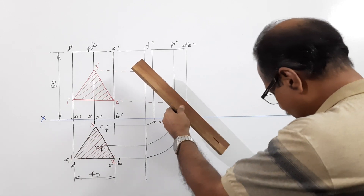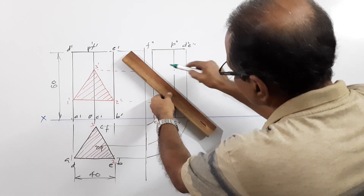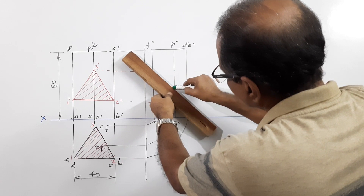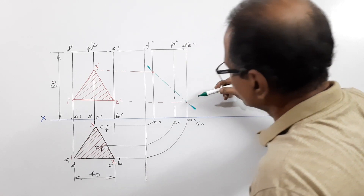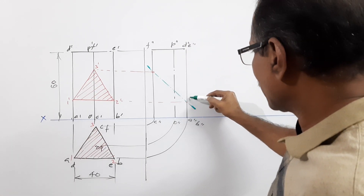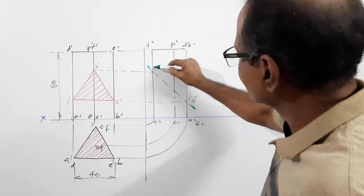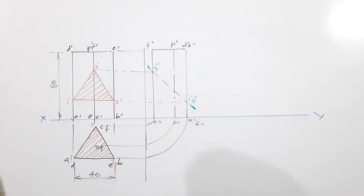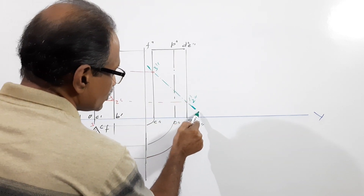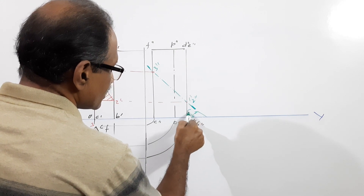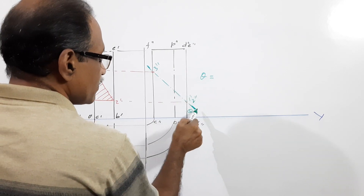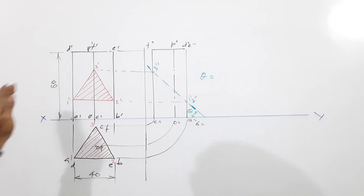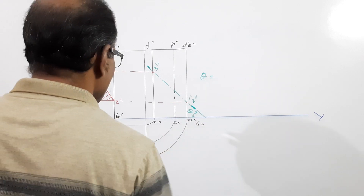Connect these points. You are asked to find out this angle theta — the inclination of the cutting plane to HP. The cutting plane is visible in the end view, so you can measure that angle and give it as the answer.